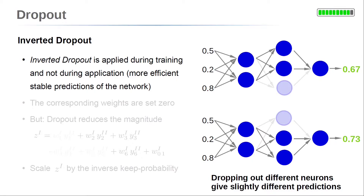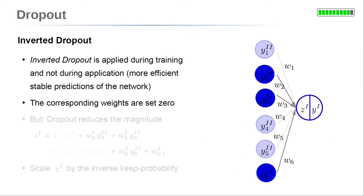This application of dropout is called inverted dropout. If a neuron is chosen to be dropped, its weights are set to zero. In the example on the right side, we have chosen a 50% keep probability. Neurons 1, 4, and 5 were selected to be dropped in the current training step. This is done by setting the connecting weights to other neurons to zero — here, these are w1, w4, and w5.